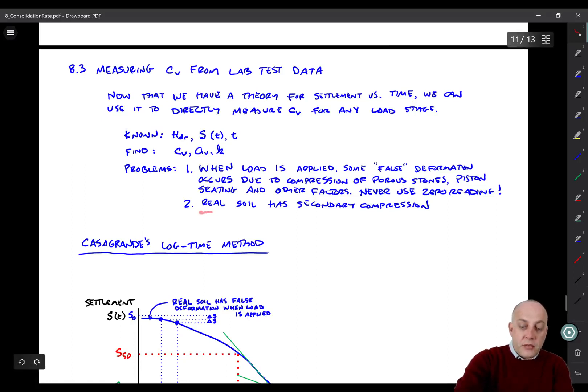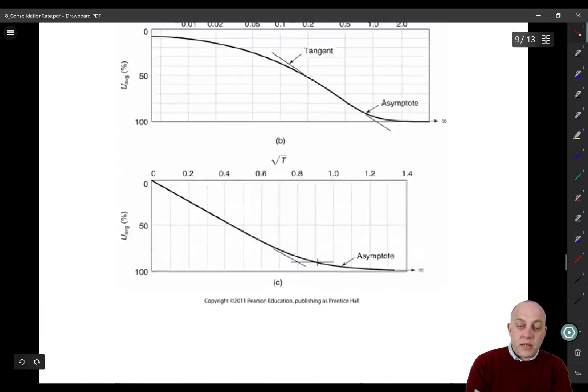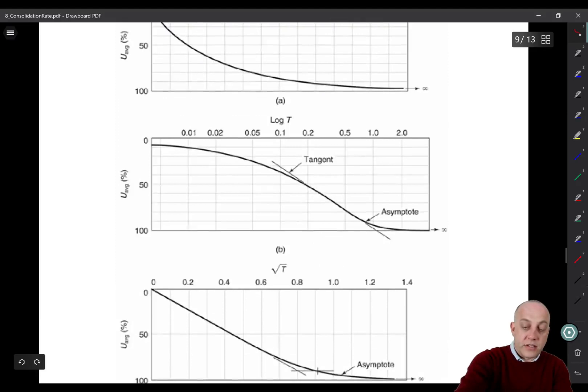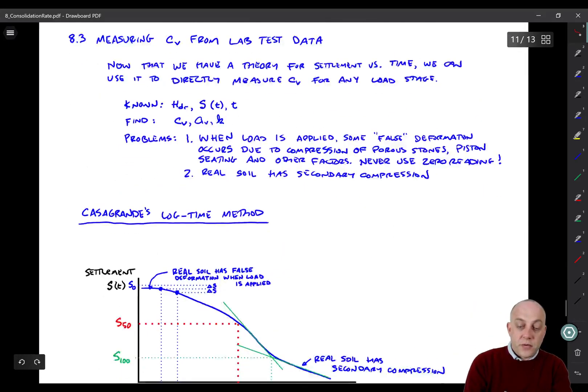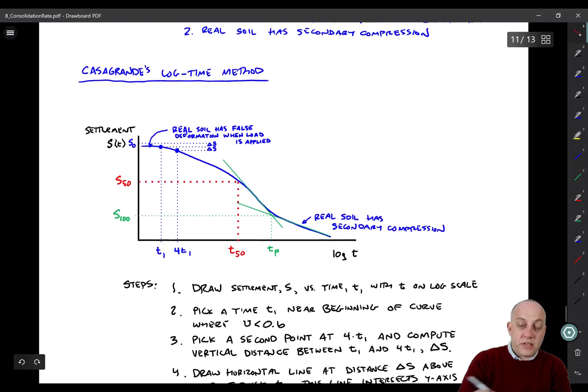The other problem is that real soil has secondary compression. If we come back up here to this plot, the theory goes asymptotic to the 100% consolidation curve, which is basically a horizontal line. But in real life, there's secondary compression, so there continues to be settlement even after consolidation is finished. For those reasons, we have these two methods.